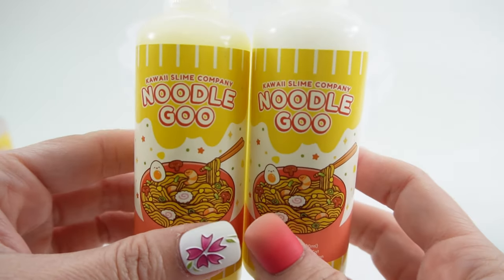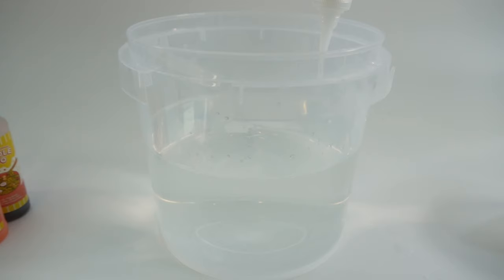So we have two bottles of noodle goo. Okay so it says to just squirt it in. Let's find out if this works. That is so cool. Do you guys see that? So let me try the yellow.